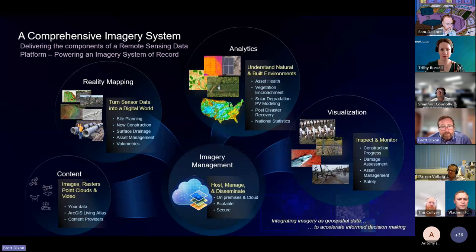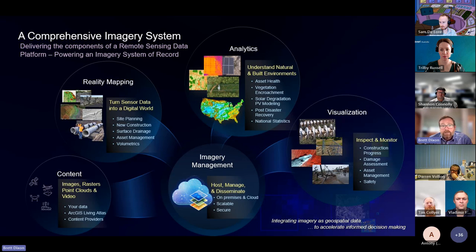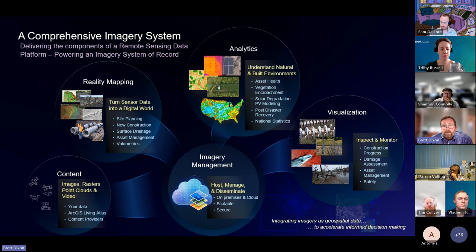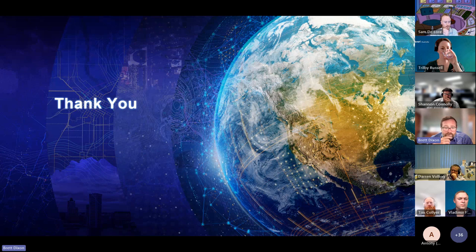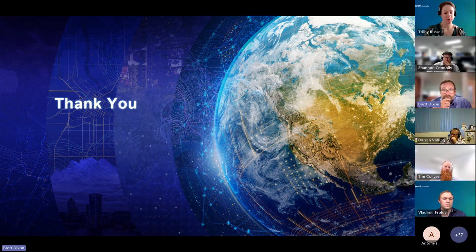ArcGIS now provides a comprehensive imagery system — many of you already own this capability — covering managed content, full workflows for reality mapping and data capture, traditional imagery analytics, AI and machine learning analytics, cataloguing and visualisation from simple to advanced 3D. That's the end of this presentation. The key trends are the importance of analytics and treating imagery as corporate data. In future meetings, I hope you all get to share your own stories so we can all learn from each other.